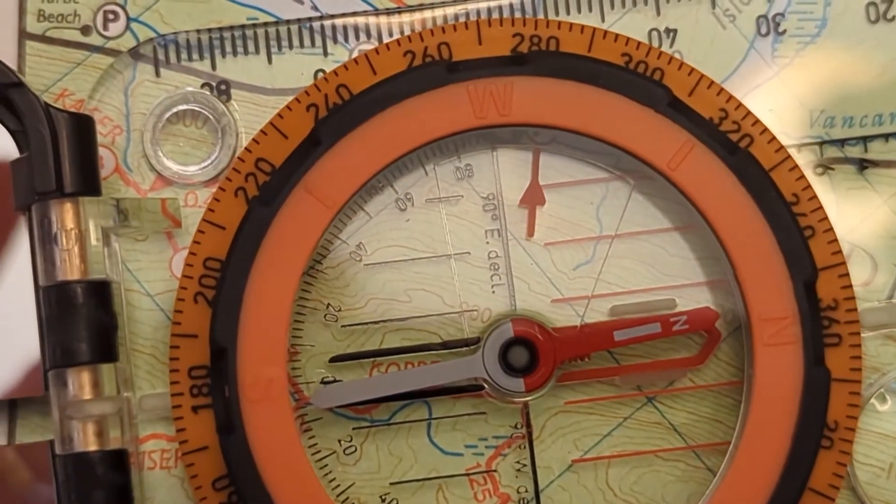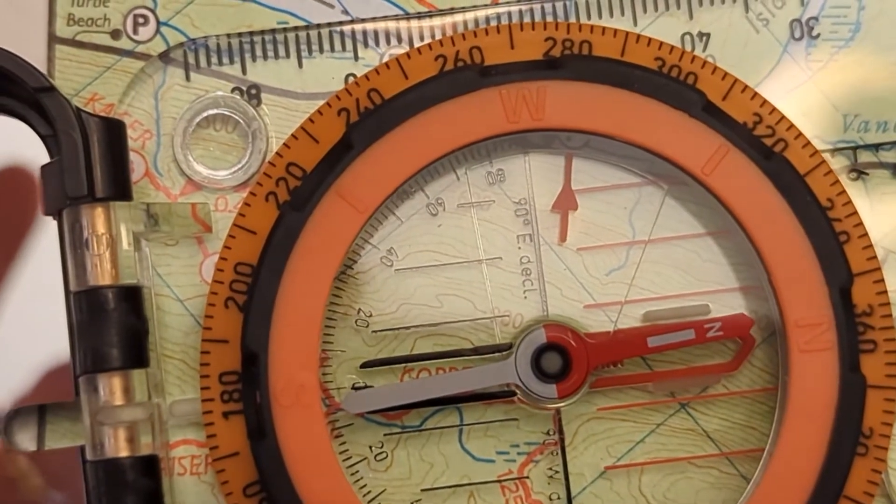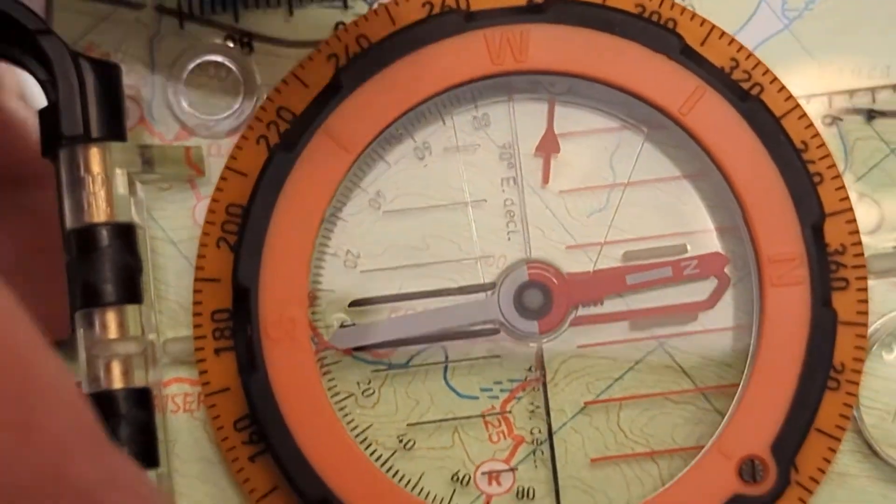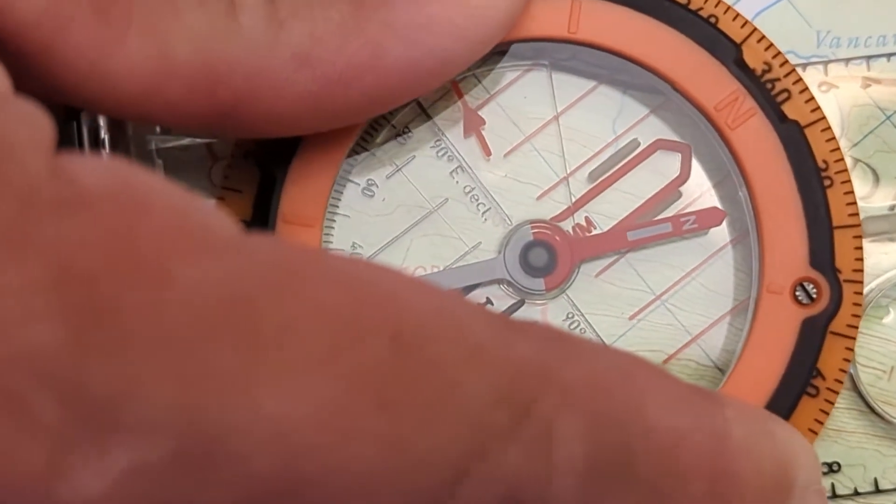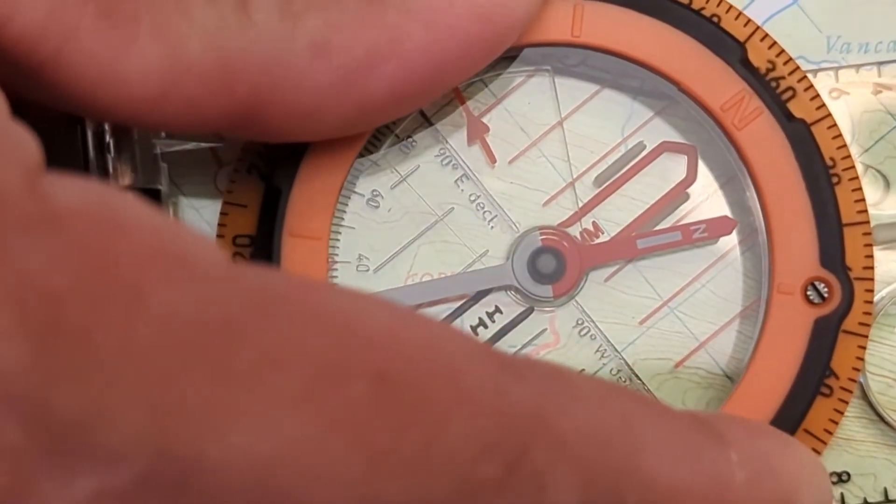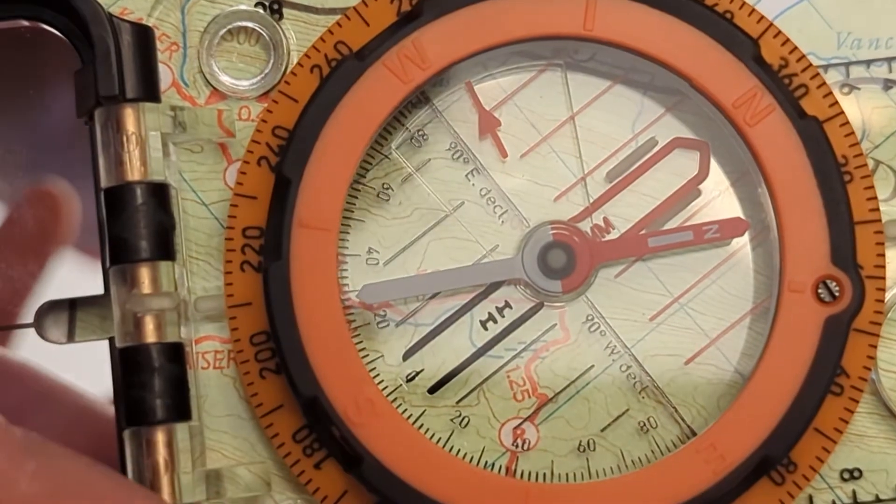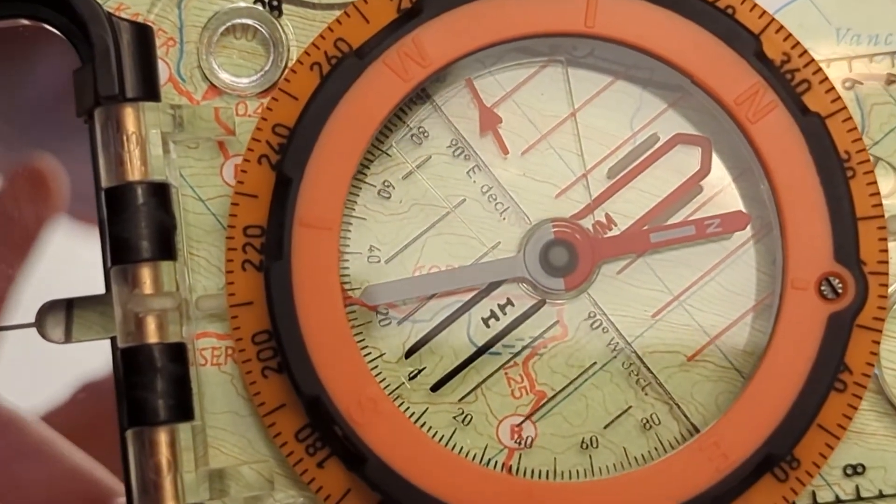Fine-tune the azimuth by turning the compass's bezel so the orienting lines on the compass are parallel with the light blue UTM lines on the map.